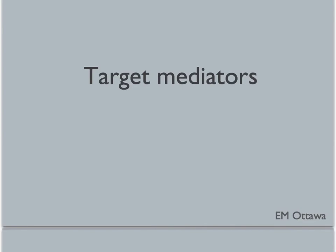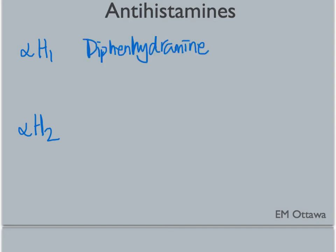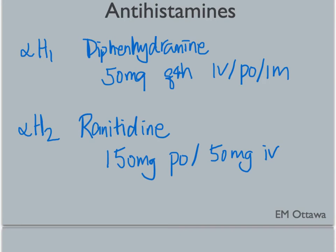Once ABC is stabilized, we can start targeting those mediators. The main treatment targets histamines with antihistamine medications. There are two kinds: H1 blockers and H2 blockers. The H1 blocker we use is diphenhydramine, given as 50 milligrams every 4 hours — IV, PO or IM. The H2 blocker we use is ranitidine, given as 150 milligrams PO or 50 milligrams IV. These medications take longer to work than epinephrine. Therefore, in a patient with anaphylaxis involving different systems, give epinephrine early before giving these antihistamines.